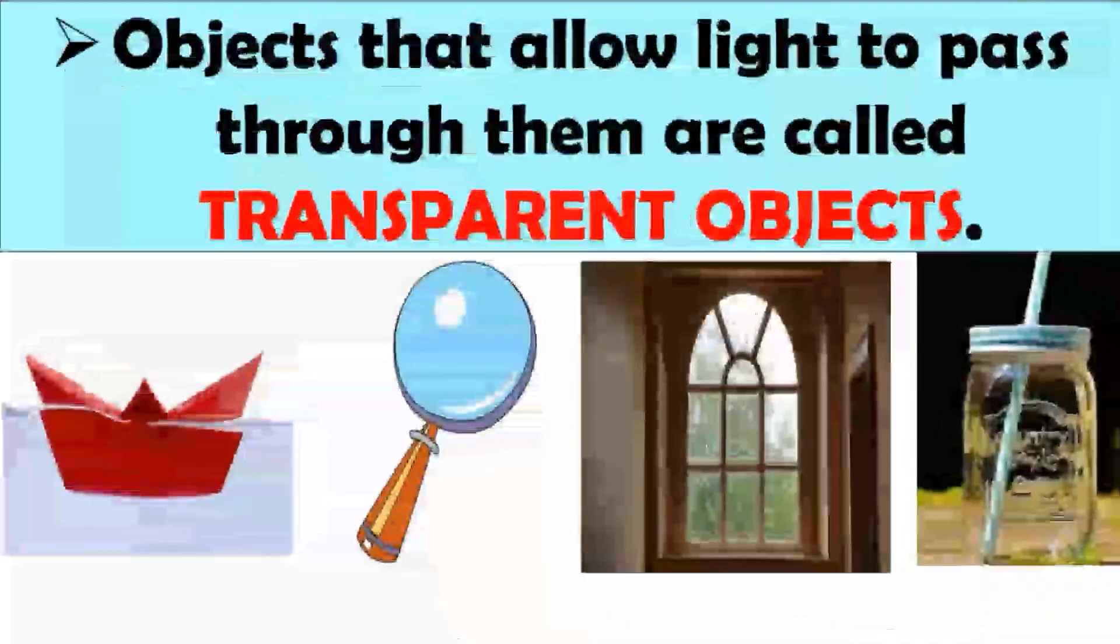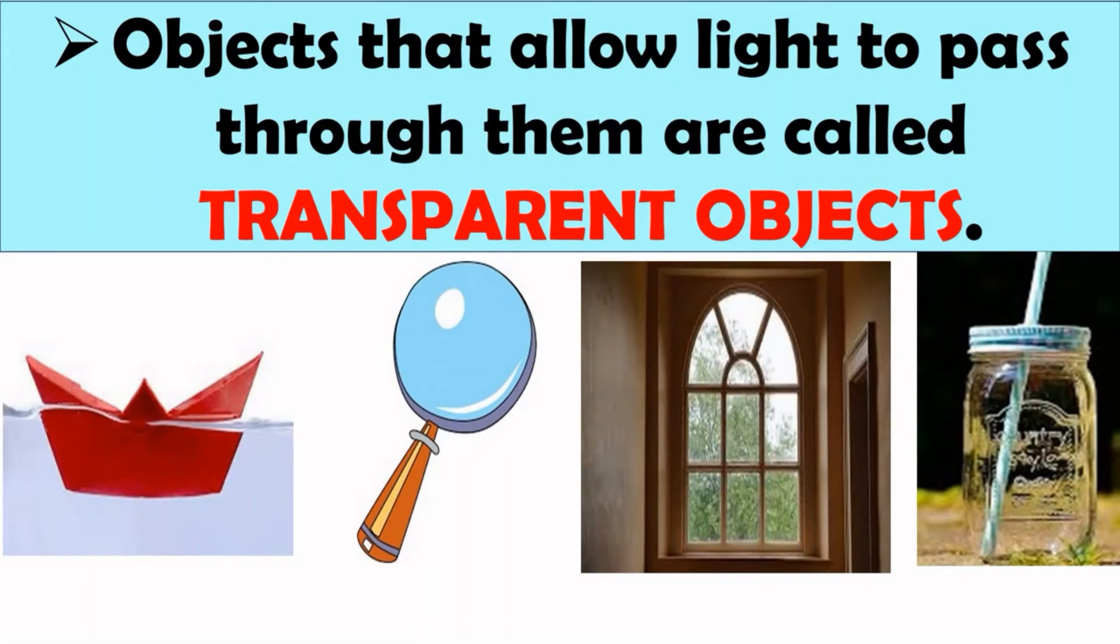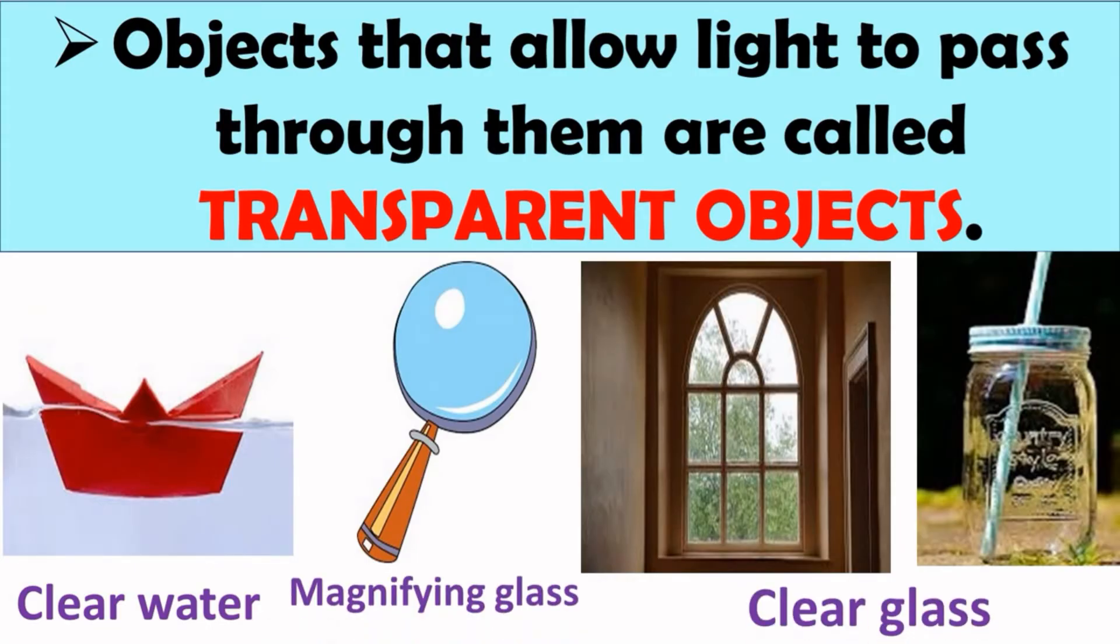Next is transparent objects. Objects that allow light to pass through them are called transparent objects. Some examples are clear water, magnifying glass, clear glass, etc.